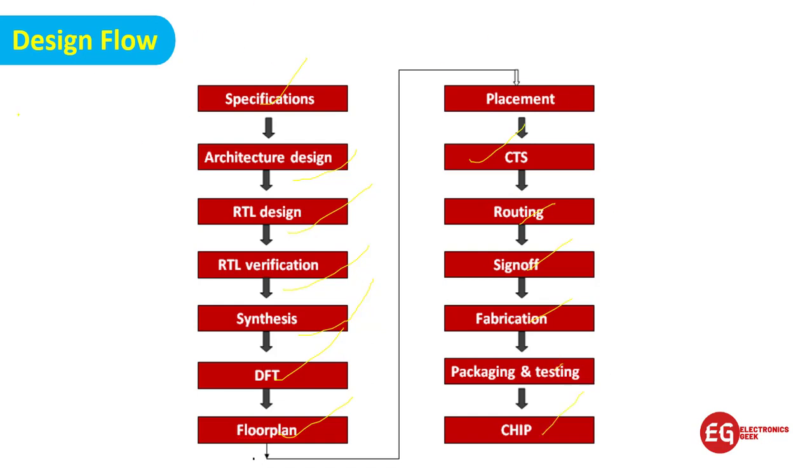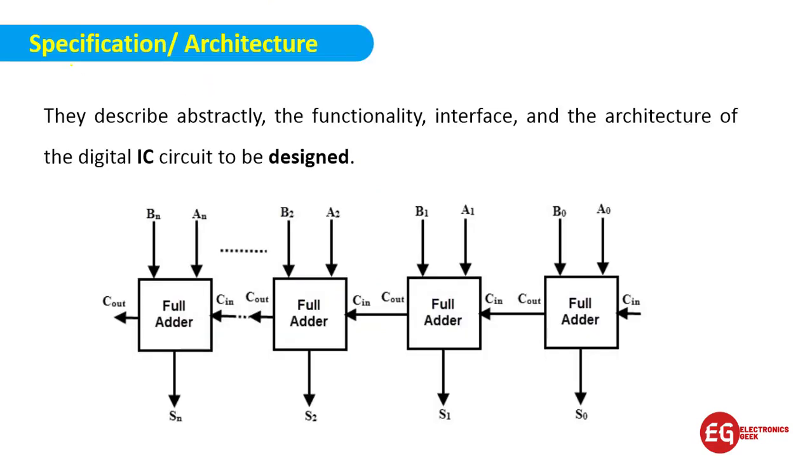The first process is specification. You'll be getting this specification that you have to design a RAM or an IC like a multiplexer, adder, or counter. The first block is to define the specification. For example, I have to design an adder.